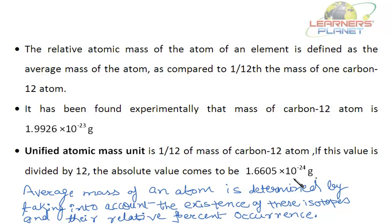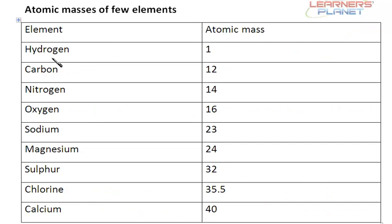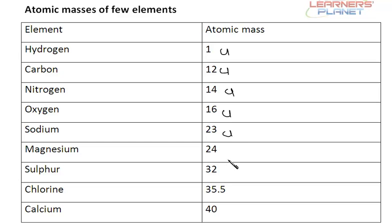Here are the atomic masses of a few elements in unified atomic mass units: Hydrogen = 1 u, Carbon = 12 u, Nitrogen = 14 u, Oxygen = 16 u, Sodium = 23 u, Magnesium = 24 u, Sulphur = 32 u, Chlorine = 35.5 u, and Calcium = 40 u.